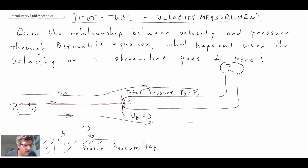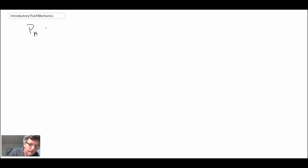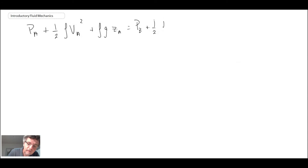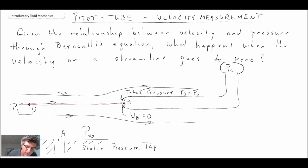With this scenario, let's take a look at Bernoulli's equation for this configuration. We evaluate it between two points: point A, which is similar to point D since that is a static condition, and point B, which is where the flow is stagnating.